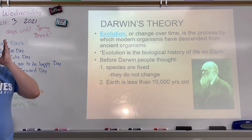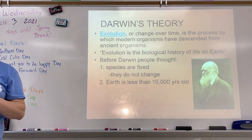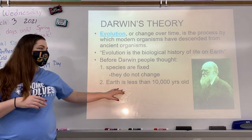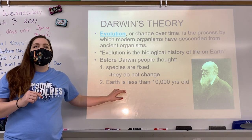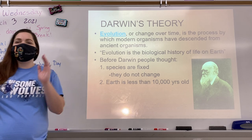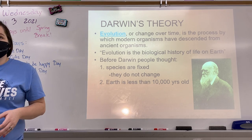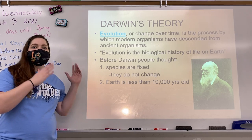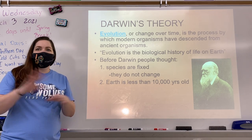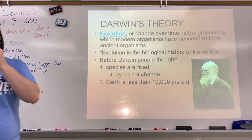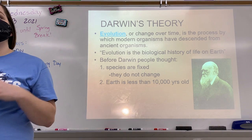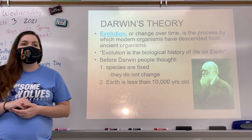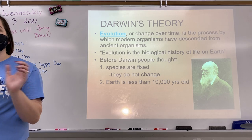Before Darwin's time, the answer to that question was that the earth isn't that old — it's only about 10,000 years old. What was there is what's here now, and what's here now will always be here. Nothing ever changes. It's the same from the beginning to the end. That was the reasoning before his time. Then he went out and did a bunch of research, and now we have our theory of evolution.